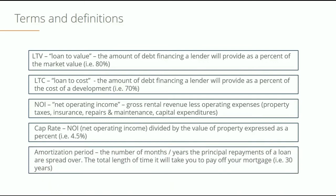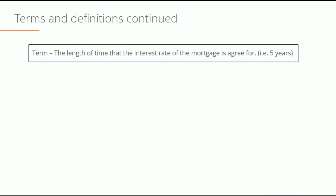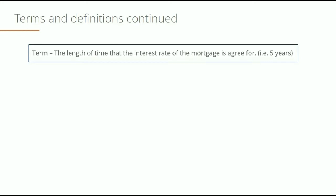Amortization period is the number of months, years, or periods that the principal repayments take to be completed. For example, a 30-year mortgage is a 30-year amortization period. Term is slightly different — it's the length of time that the interest rate on the mortgage is agreed for. So you may have a 30-year amortization period but just a 5-year term on the interest rate agreement, meaning in 5 years you're going to have a different rate when it resets.